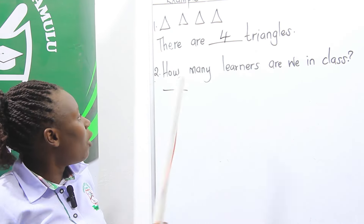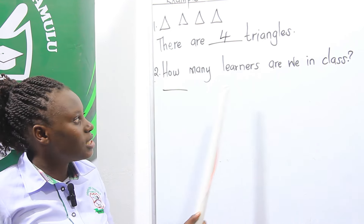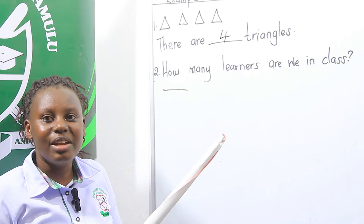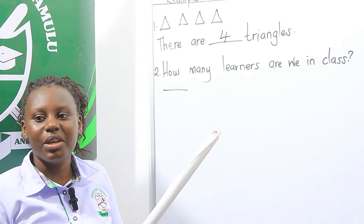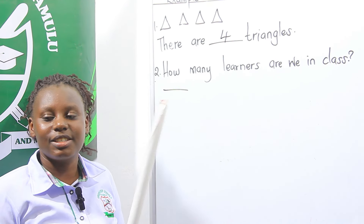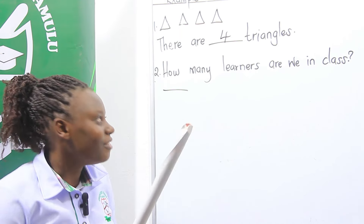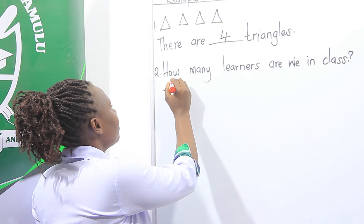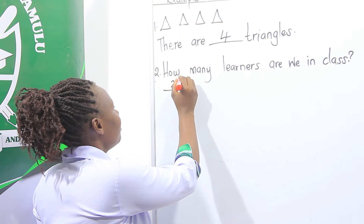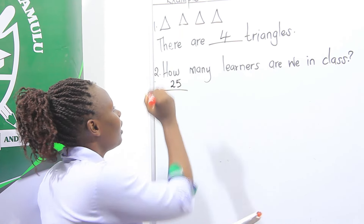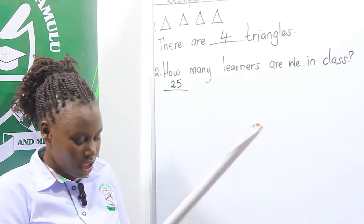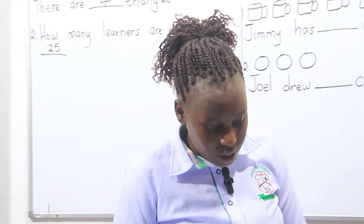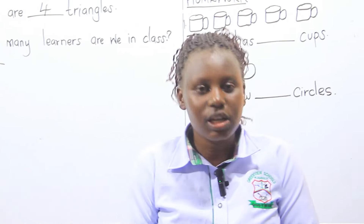How many learners are we in class? How many learners are we in class? Very good. We are having 25 learners. As simple as like that.